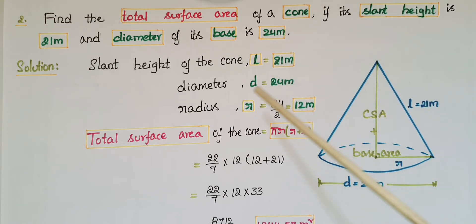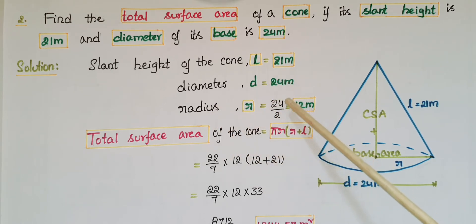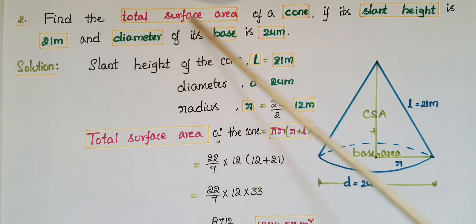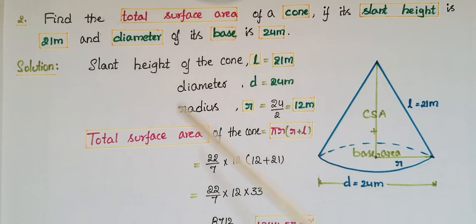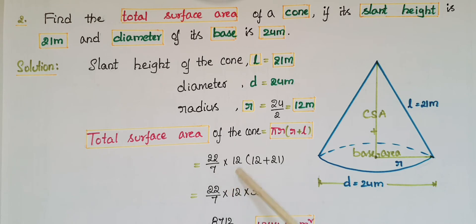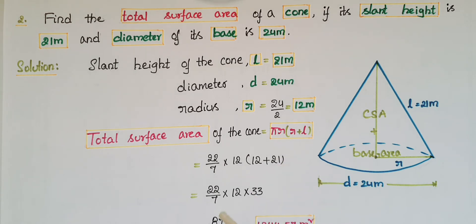Radius r is equal to diameter by 2, so 24 by 2 equals 12 meters. We have to find the total surface area of the cone. Total surface area equals π r (r + l), so that is 22/7 × 12 × (12 + 21).